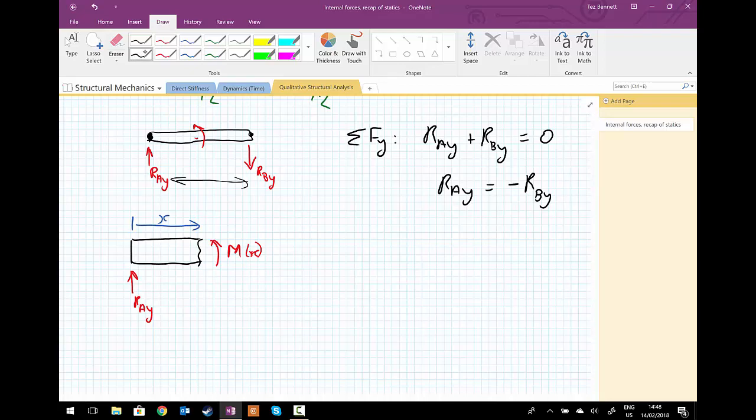So taking moments about that point X, I have the positive moment, anticlockwise moment M(x) equals RAY times x.